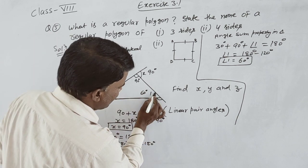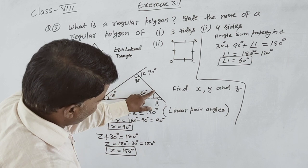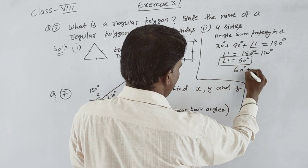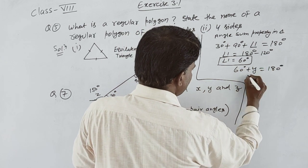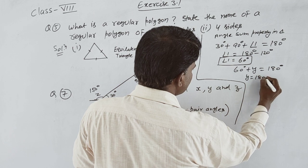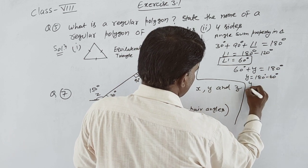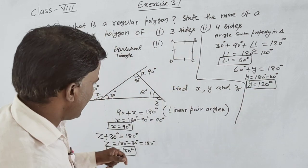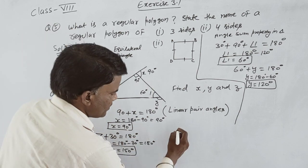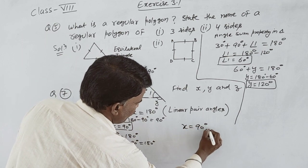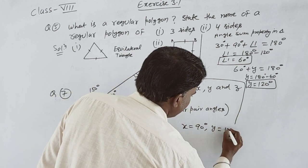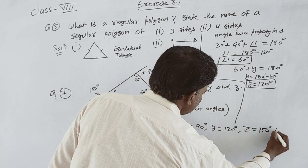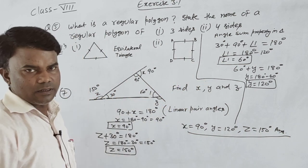Using linear pair method, we find x equals 90 degrees, y equals 120 degrees, and z equals 150 degrees. That completes the solution.